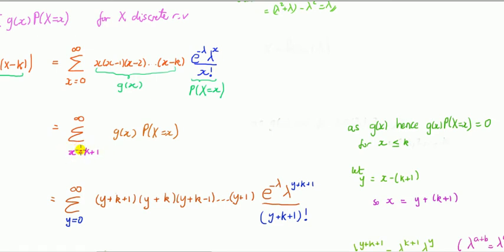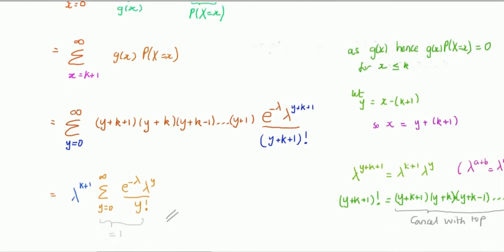The next idea — if you've done a question where you proved the variance of a Poisson this way — is that we want to rewrite this so that we are summing back from 0 to infinity, then pull out the answer, and recognize a probability mass function which sums to 1. We make the substitution y = x minus (k+1), so that when x is k+1, y is 0. This new variable y starts at 0.